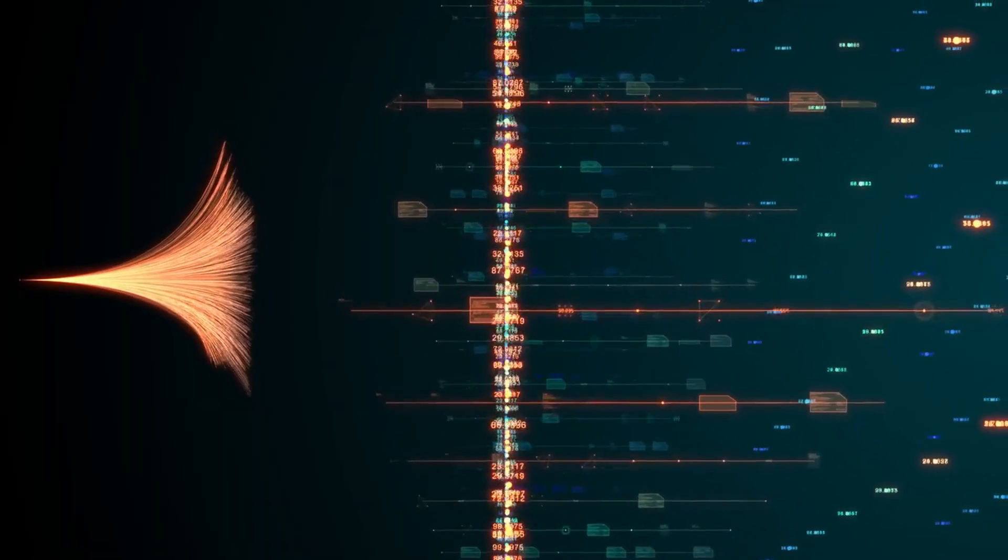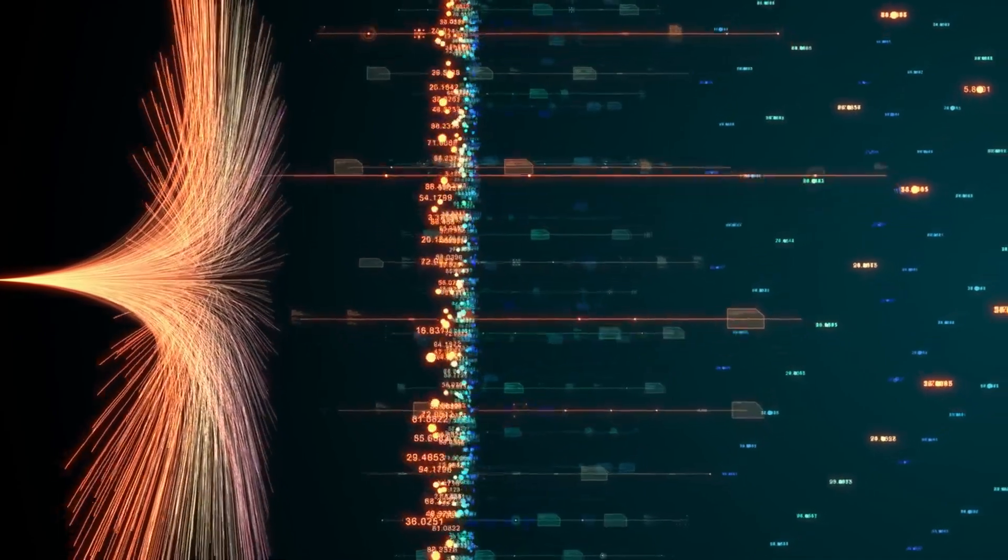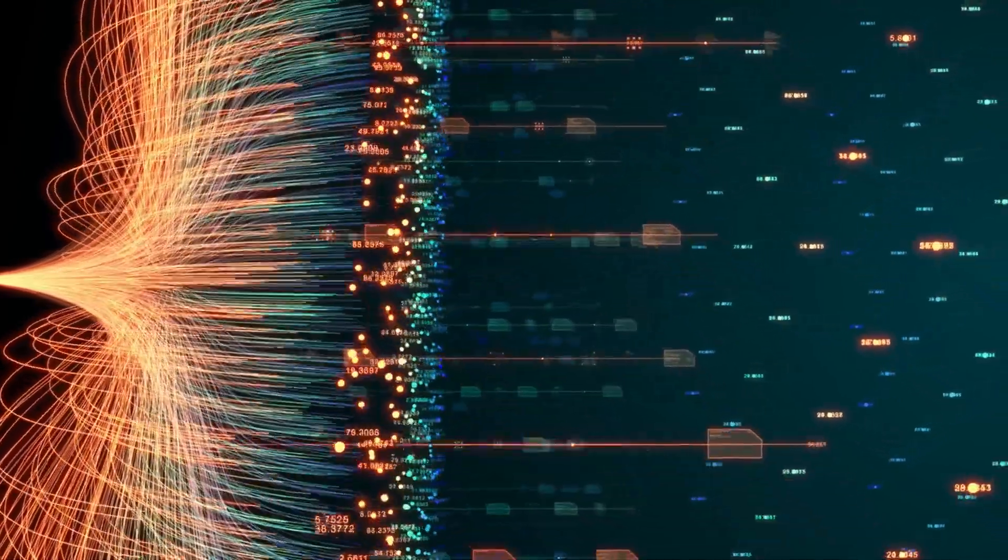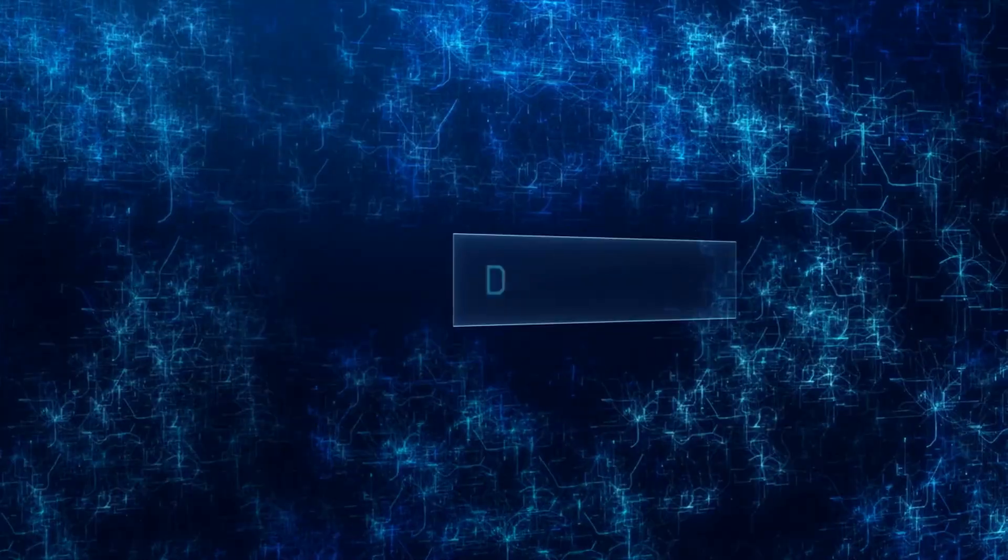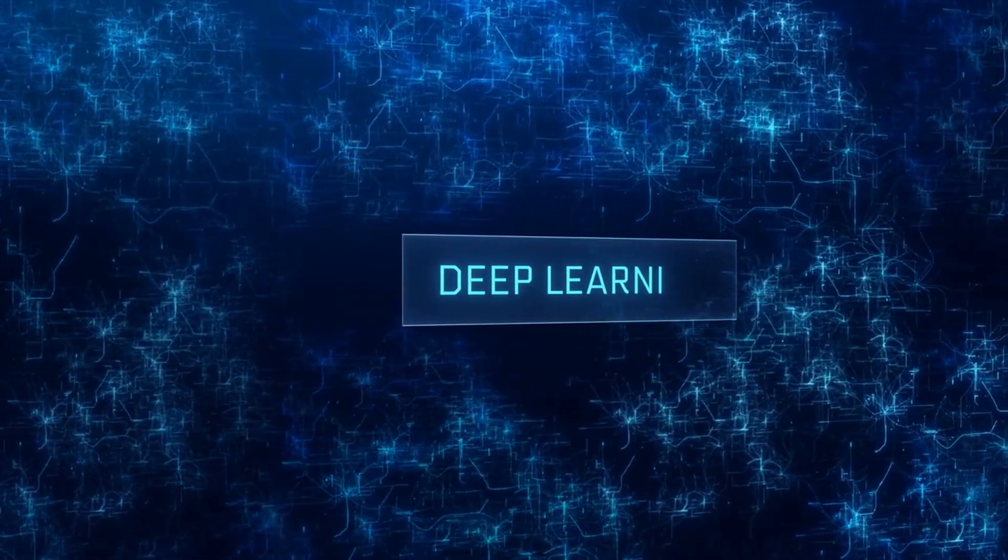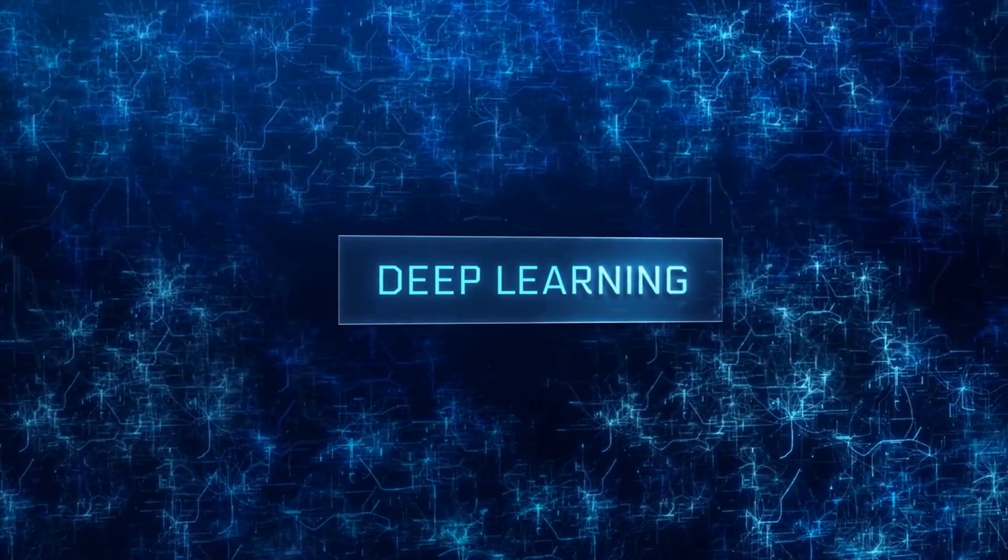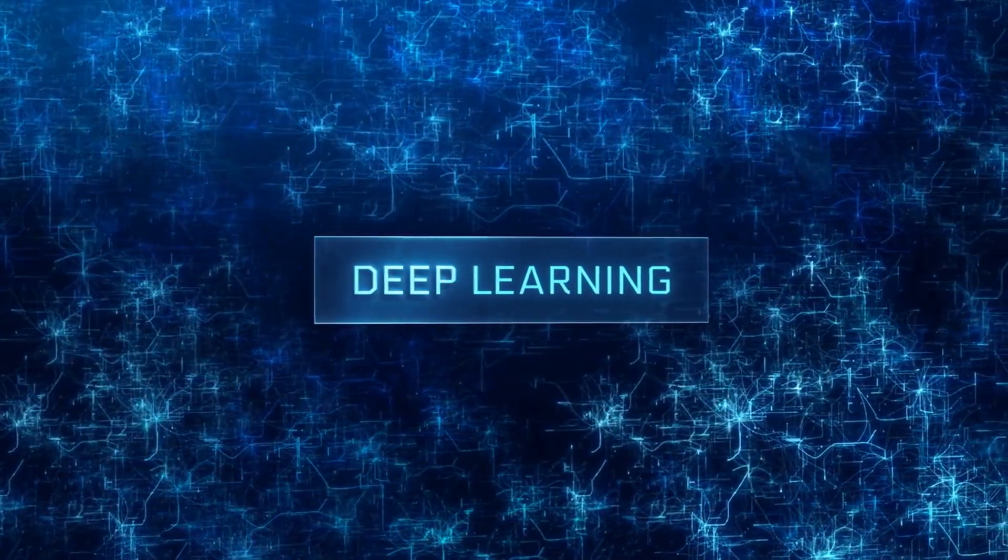Deep learning is a subset of machine learning that involves the use of artificial neural networks to learn from large amounts of data. Deep learning is used in applications such as image and speech recognition, natural language processing, and autonomous vehicles.